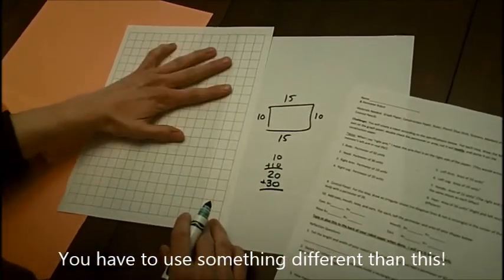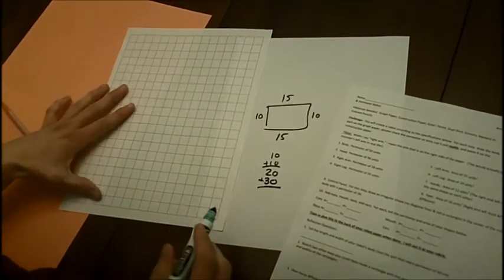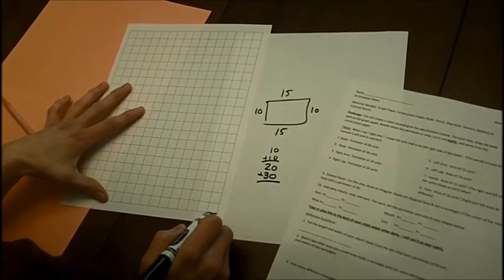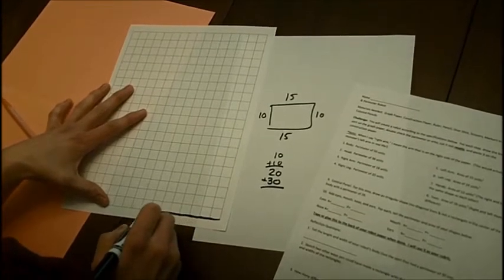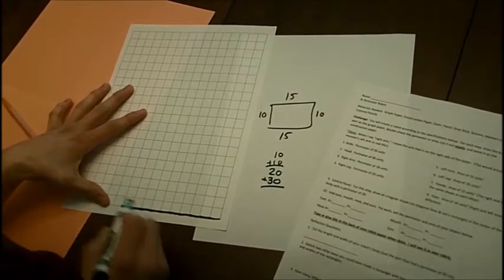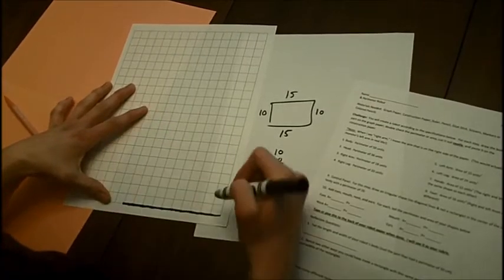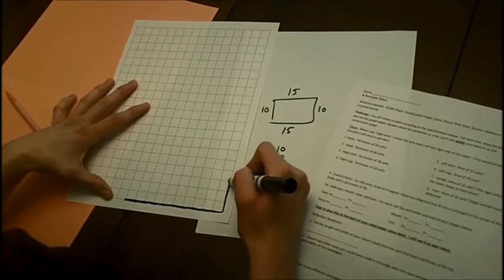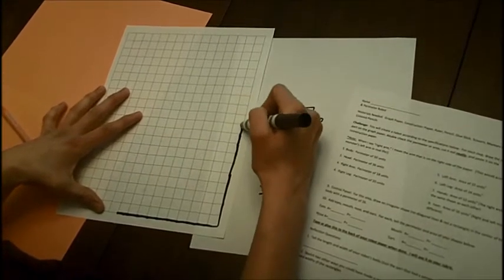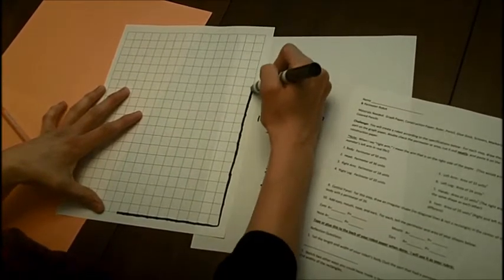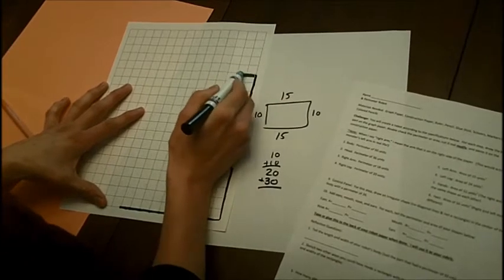Then I would draw that on my sheet here. So I'm going to make my short side 10: 1, 2, 3, remember you're using pencil, 4, 5, 6, 7, 8, 9, 10. And then I'm going to go 15 this way: 1, 2, 3, 4, 5, 6, 7, 8, 9, 10, 11, 12, 13, 14, 15. And then I can close it up.